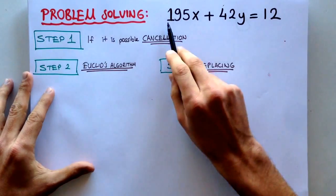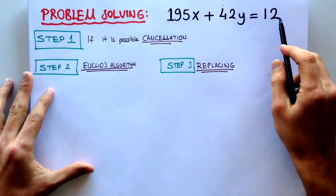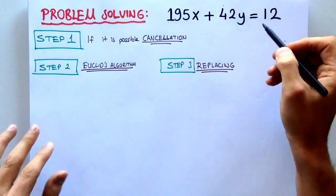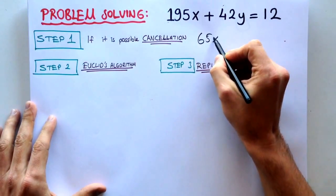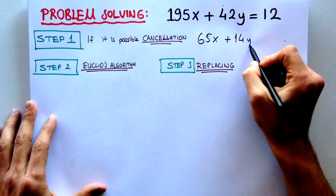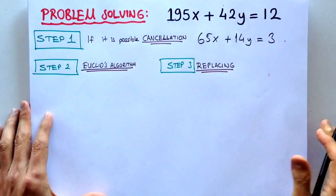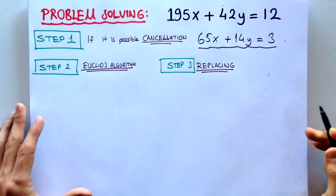For example, step one for these kind of problems, we have to cancel them out if it's possible. If we cancel them out by 3, we will find that 65x plus 14y is equal to 4. It means that it is more simpler, it is simplified.